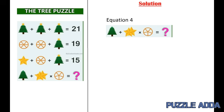Now the last equation, equation 4, which we need to solve: a tree without a star plus 2 stars multiplied by a circle with 5 lines — not 6 lines. Following BODMAS, we first consider multiplication then addition. The value of a star from equation 3 is 2, so 2 stars is equal to 4.